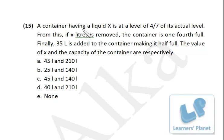See this: A container having a liquid X is at a level of 4 by 7 of its actual level. From this, X liters is removed, the container is one-fourth full. Finally, 35 liters is added to the container making it half full. The value of X and the capacity of container are respectively...